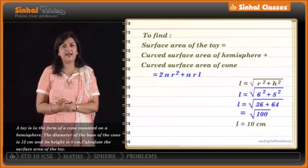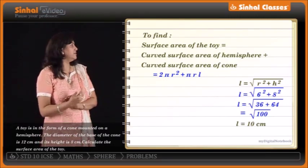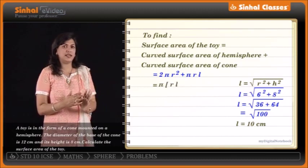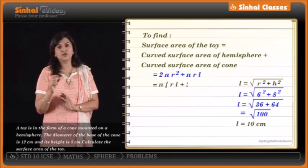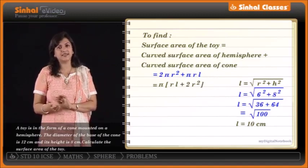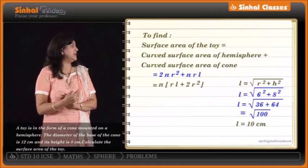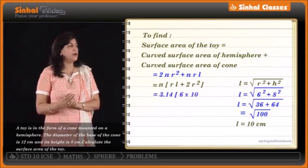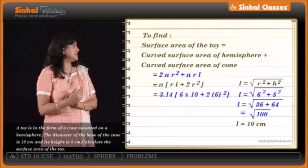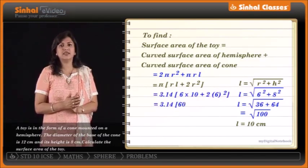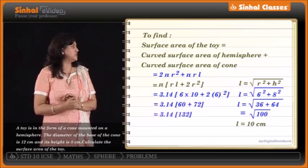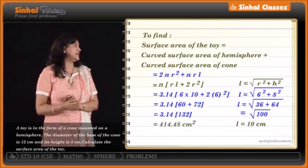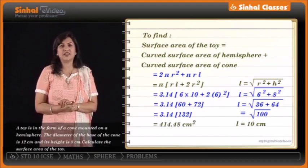Substituting slant height L = 10 cm into the formula: π(RL + 2R²) = π(6 × 10 + 2 × 6²) = 3.14 × (60 + 72) = 3.14 × 132 = 414.48 cm². This is the required surface area of the toy.